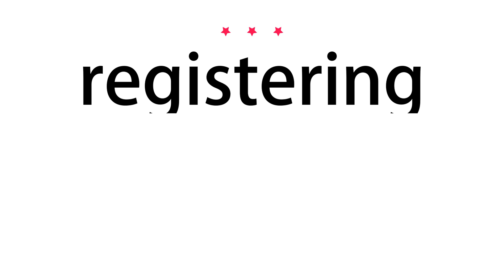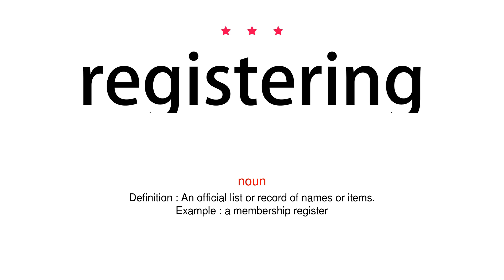Register. Noun. Definition: an official list or record of names or items. Example: a membership register.